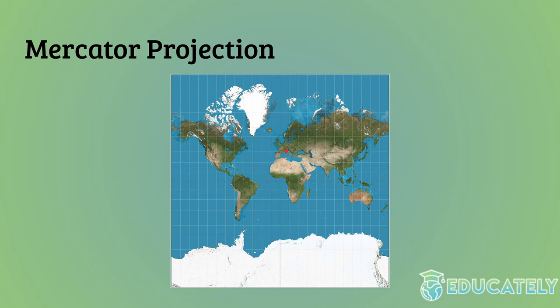It's hard to explain without getting mathematical, but basically it's very easy to calculate exact angles on this map. Especially if you were sailing back then and needed to sail at a specific angle along a specific path, you could use a compass, calculate the angle you need on the map, and apply it in real life. It was very good for navigational purposes.